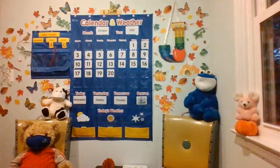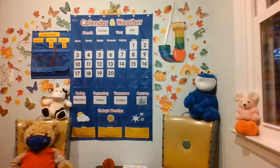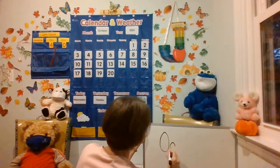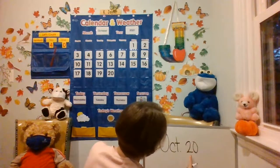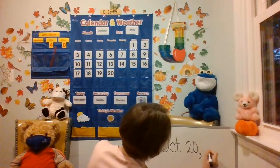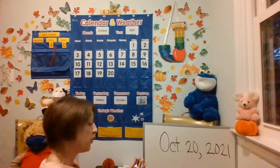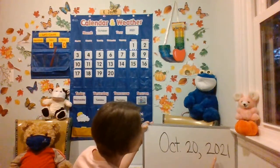Let's go ahead and write today's date — you need something to write on and something to write with. You're using your dry erase marker and board. Make sure you have the cap on the bottom so you don't lose it. Let's start with our uppercase letter O: O, C, T, period, finger space — October 20th. Make a 2 and then a 0, comma, 2021. Go ahead and write that down, then put the cap back on top so it doesn't dry out. Let's read it together — ready? October 20th, 2021.